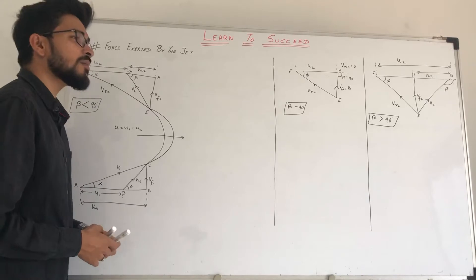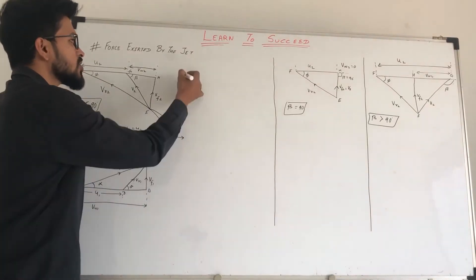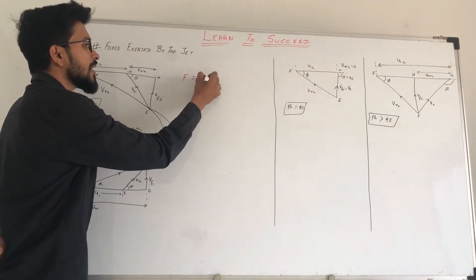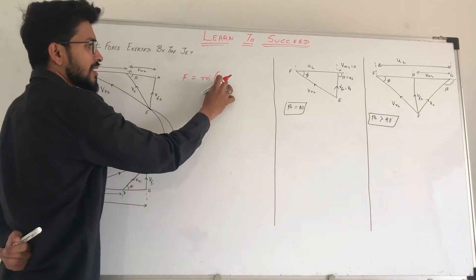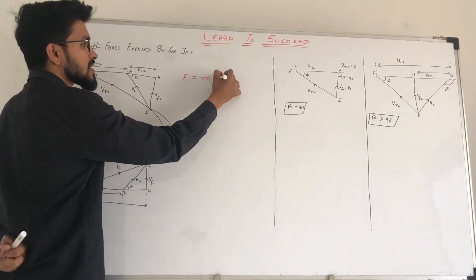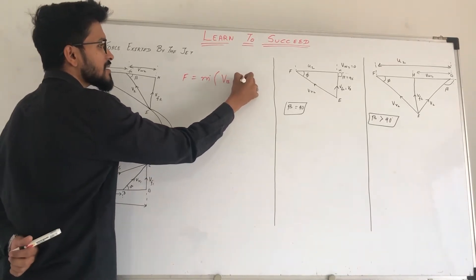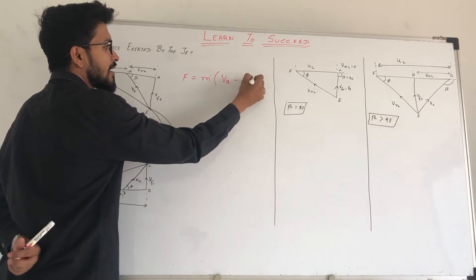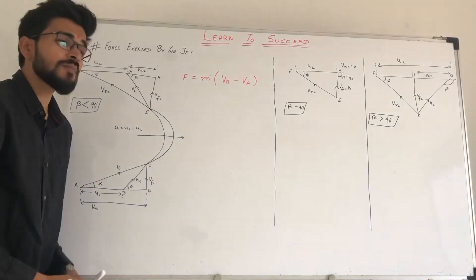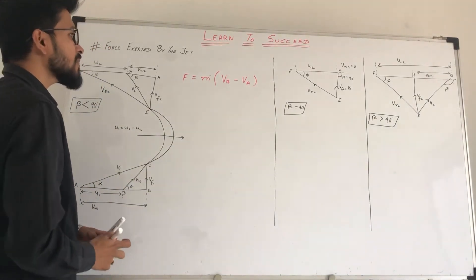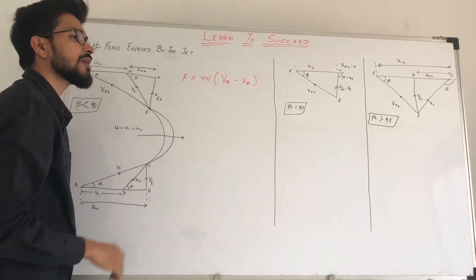For the first case, the basic formula is: F is equal to M times (velocity before striking minus velocity after striking). So we have VB minus VA, where VB is velocity before striking and VA is velocity after striking. If we get these three values and put them in, we will find this formula.